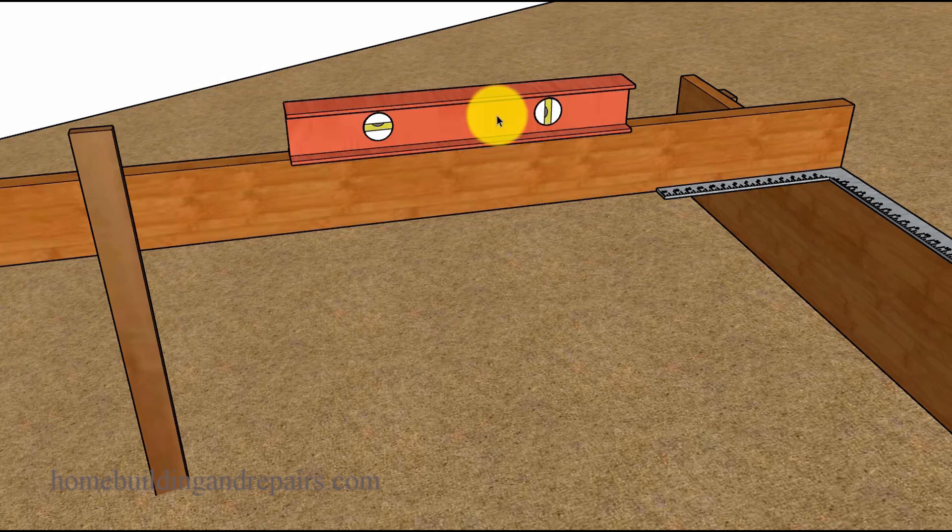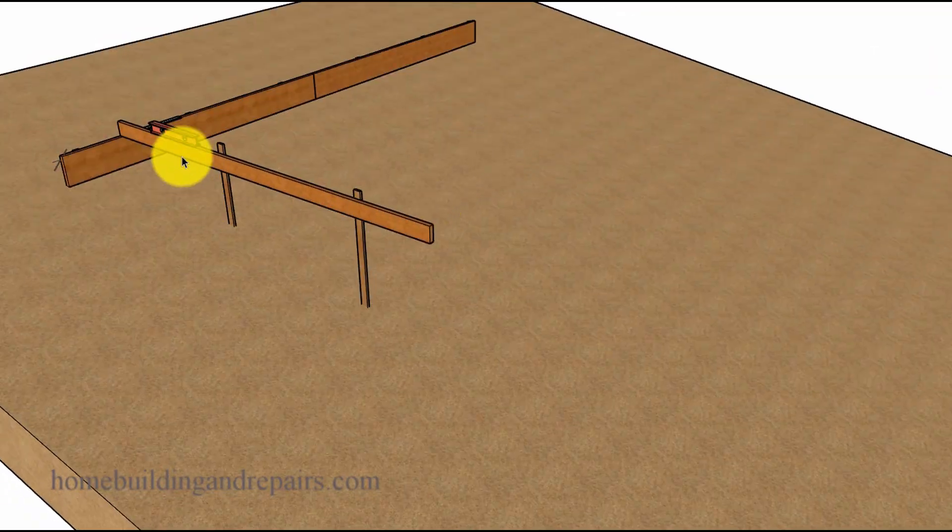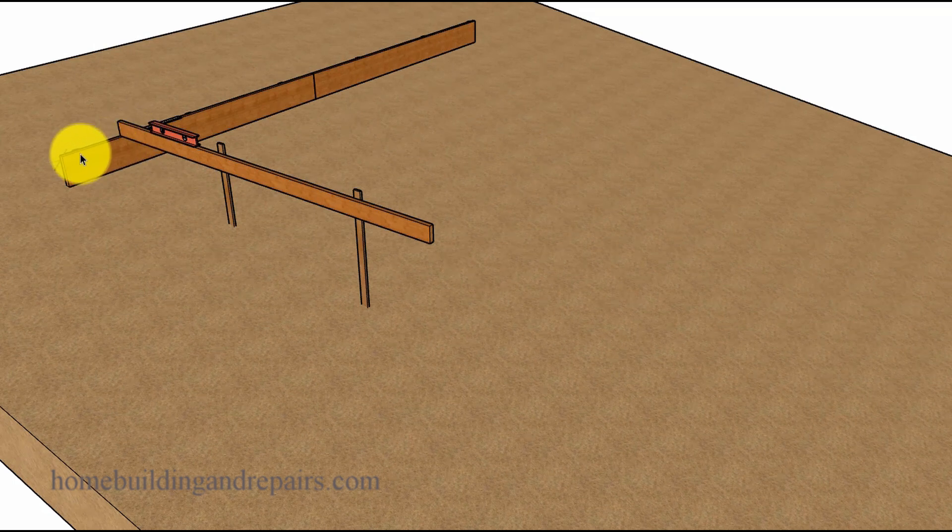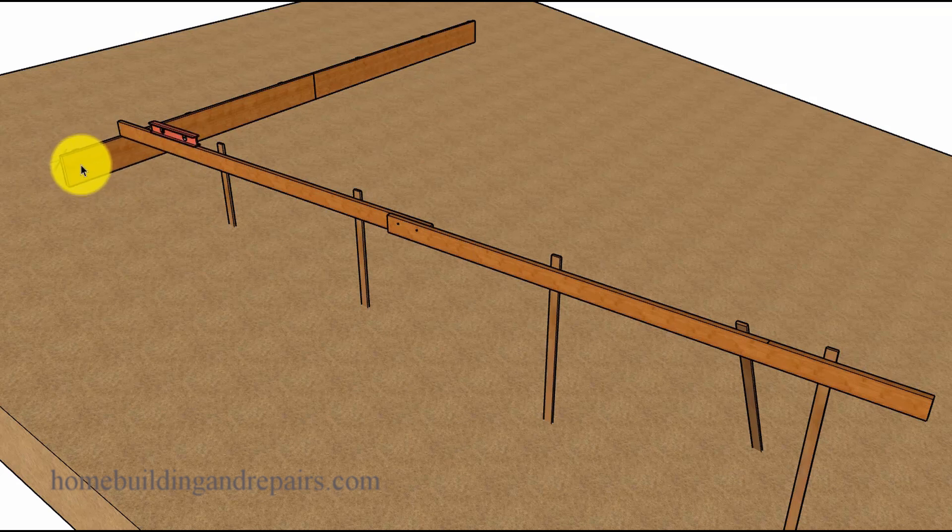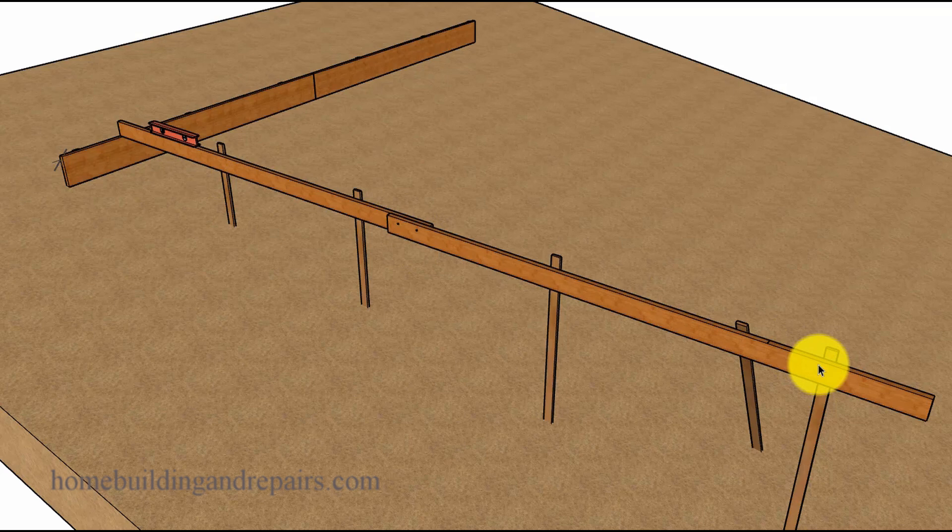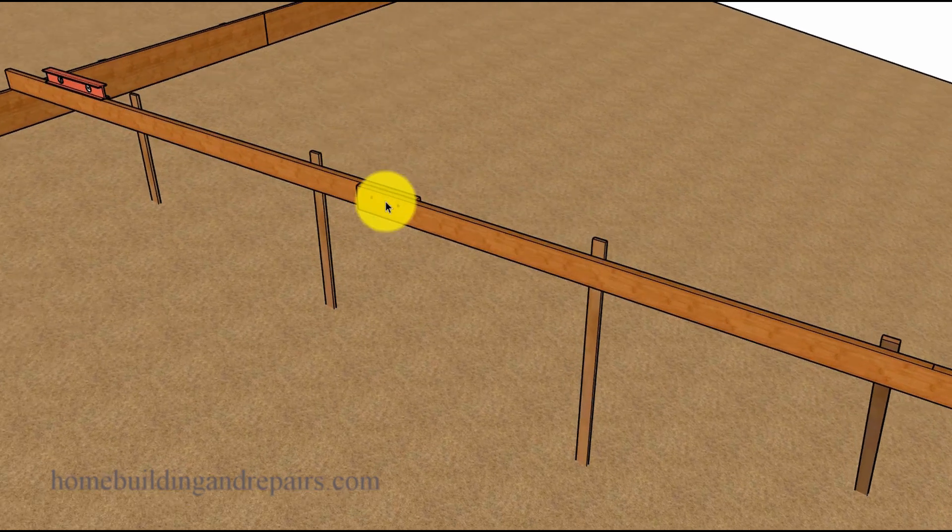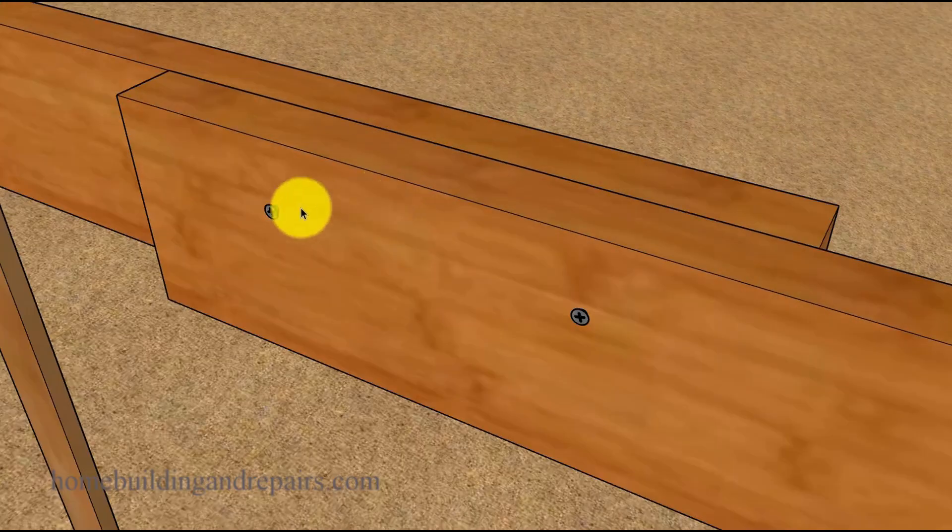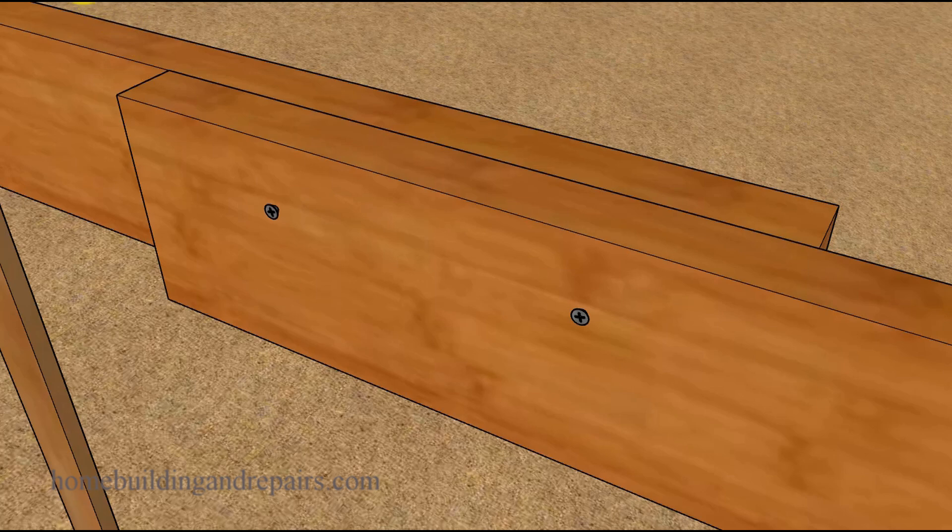So again, our guide board is going to need to be level and square and out of our way. For example, if we put it at the edge of the building it could be in the way of our form boards. However, if you don't think it's going to be in the way, feel free to put it wherever you want. After we have this one firmly secured and level and square, we can add the next piece, along with any braces or screws or nails that we are going to use to prevent it from moving.